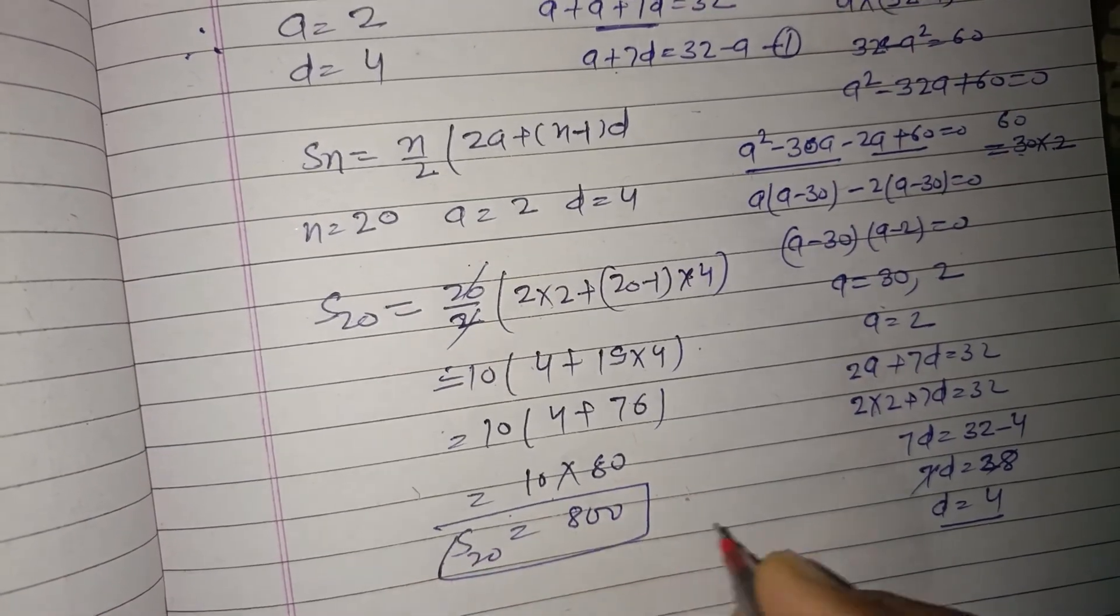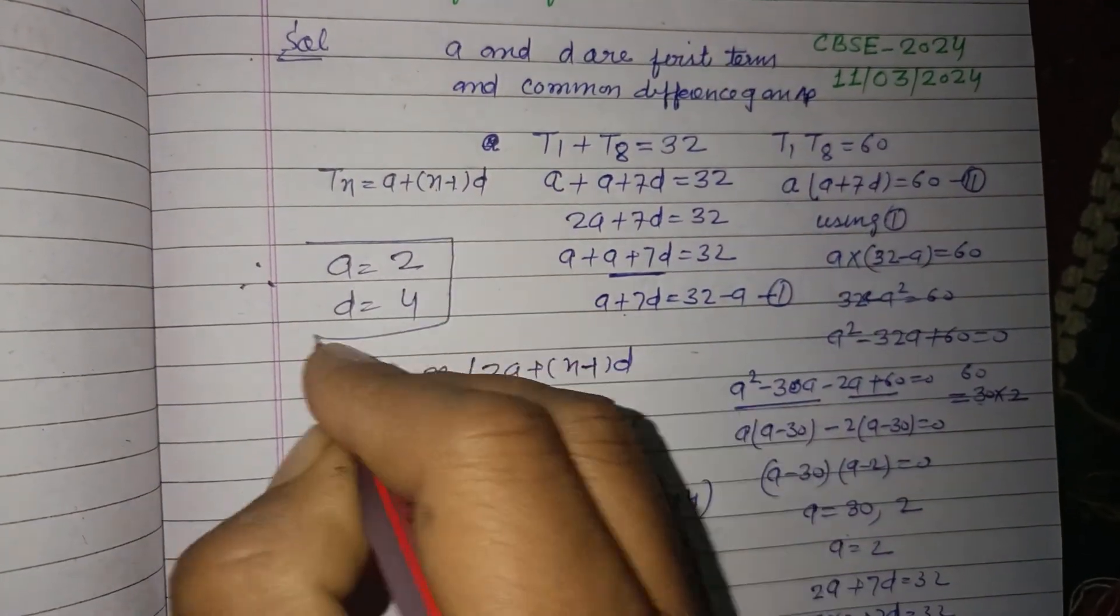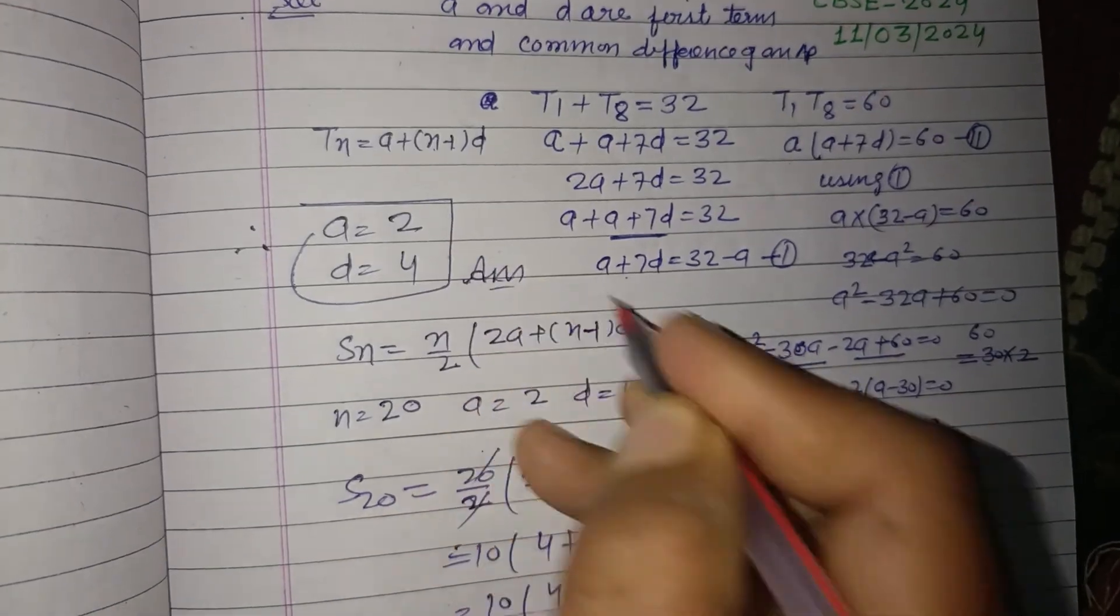10 into 80 is 800. So sum of 20 terms is 800, and a and d are as calculated. These are our answers.